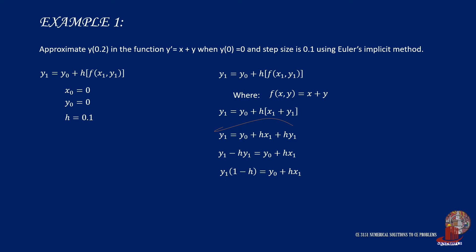Making the left side y1 times the quantity (1 - h), and place this quantity as the denominator to isolate y1, making it equal to (y0 + h·x1) / (1 - h).